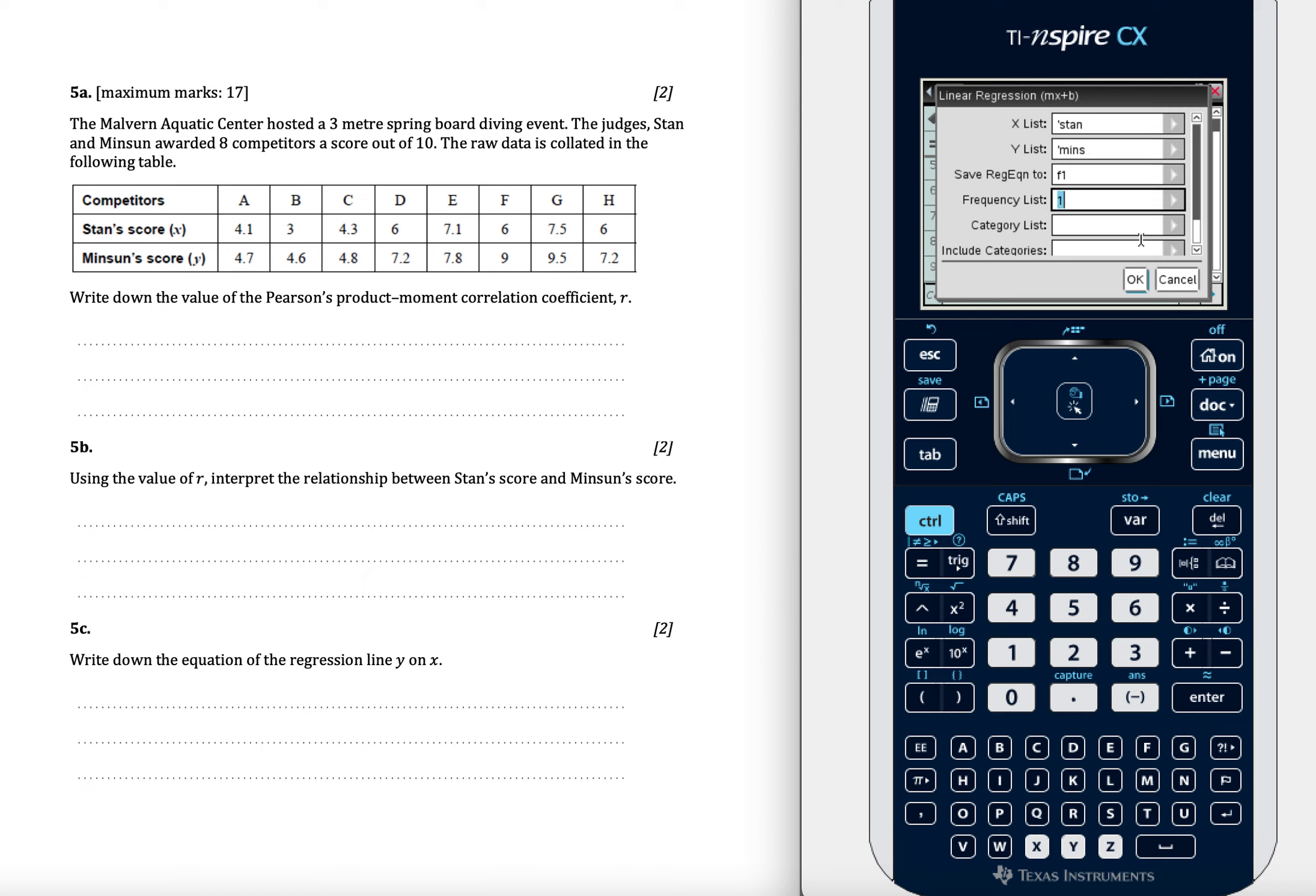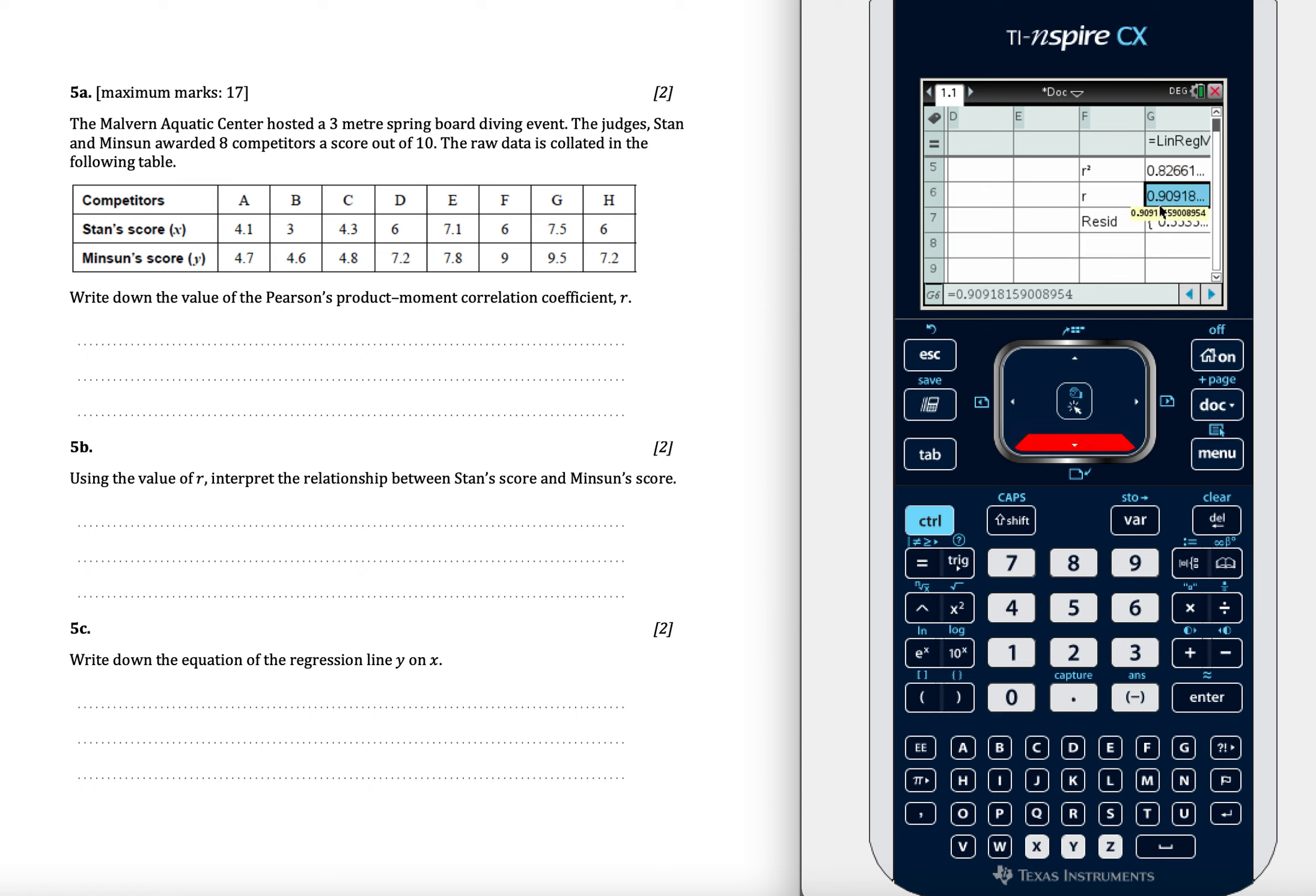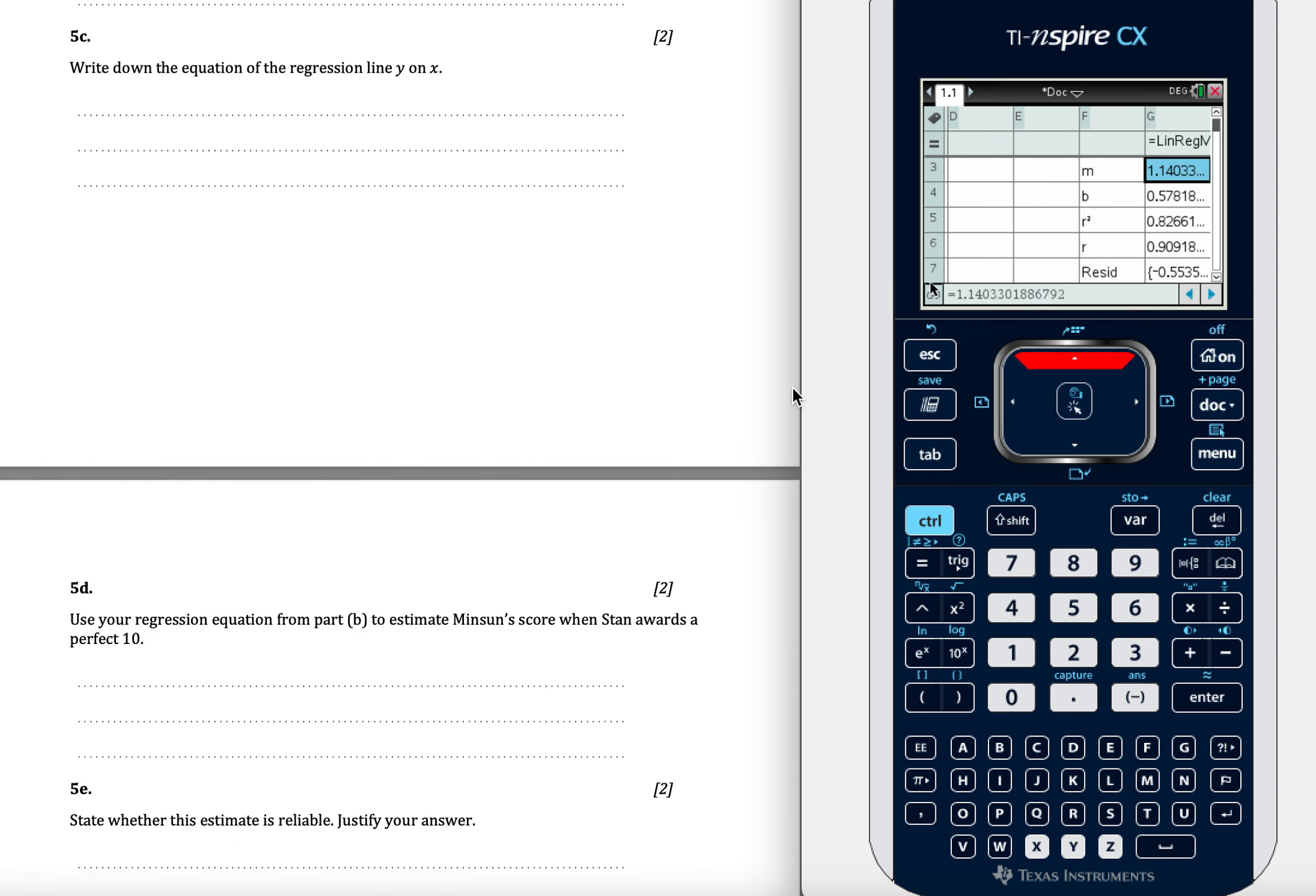We've got a frequency of one of each, category list, no categories, and I'm just going to be cheeky here. What I'm going to do is I'm going to move this over into column F, because I know I need to type something into the calculator in a minute. Then we click OK, and it gives us an R value of 0.90918, as we've already stated. It gives an R squared value of 0.826, so there's a strong positive correlation there, which allows us to interpret the relationship. And then later we can write the equation of regression as Y equals 1.14X plus 0.578. So that's answered parts A, B, and C straight away on the calculator.